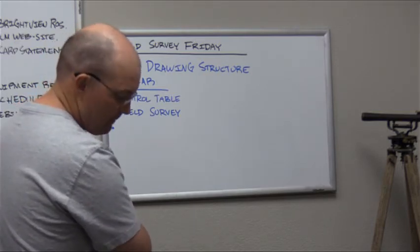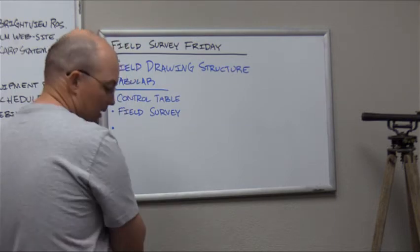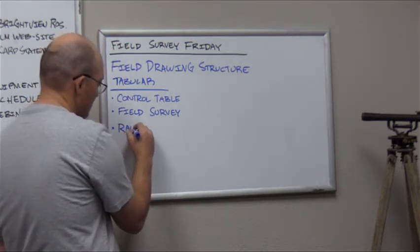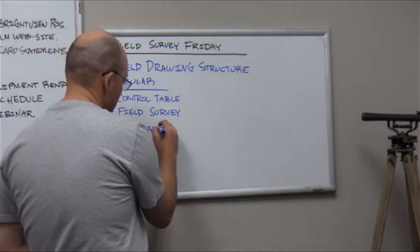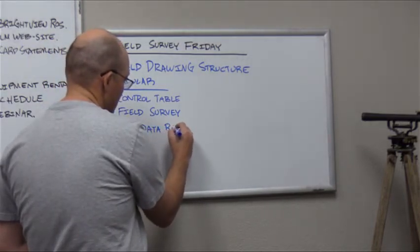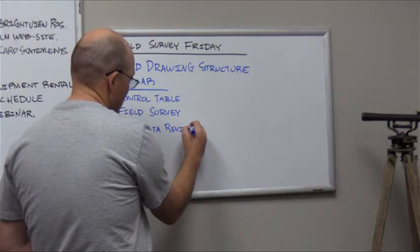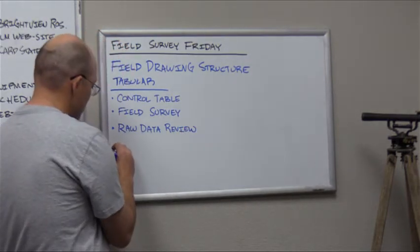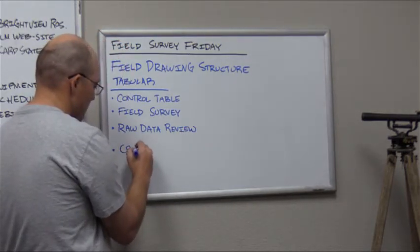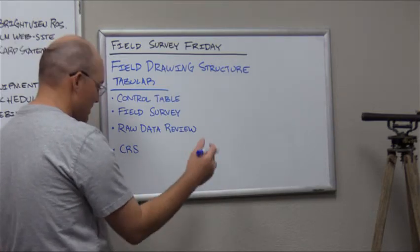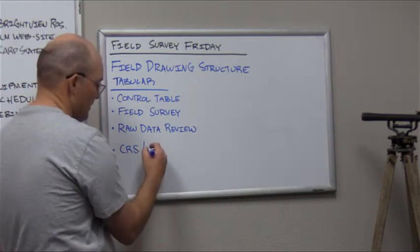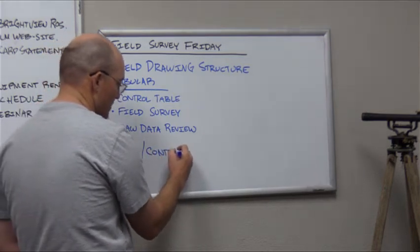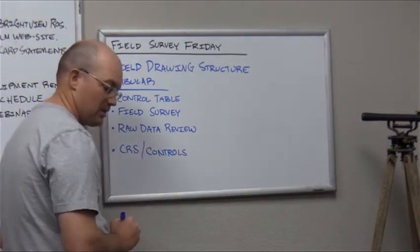I usually also have some notes on raw data review, which you could structure in a table: who did it, what were they doing, what steps and actions did they take. Then I have information about our coordinate reference system, map projection, date, and scale factors — and general control notes covering what methods we used for primary and secondary control.